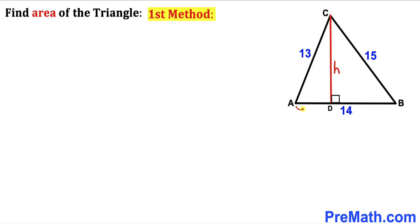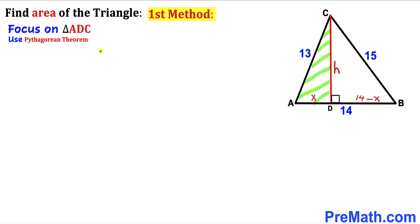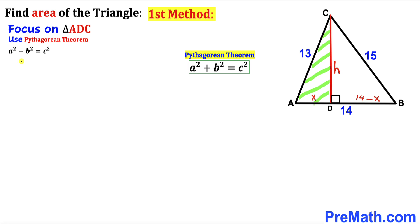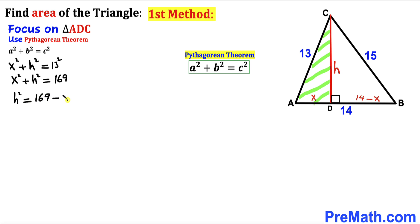Let me label segment AD as x. Since the whole AB length is 14, segment BD is going to be 14 minus x. Now let's focus on right triangle ADC and apply the Pythagorean theorem: a² + b² = c². In our case the hypotenuse is 13, so x² + h² = 13² = 169. Moving x² to the right hand side gives us h² = 169 − x². Let's call this equation number one.